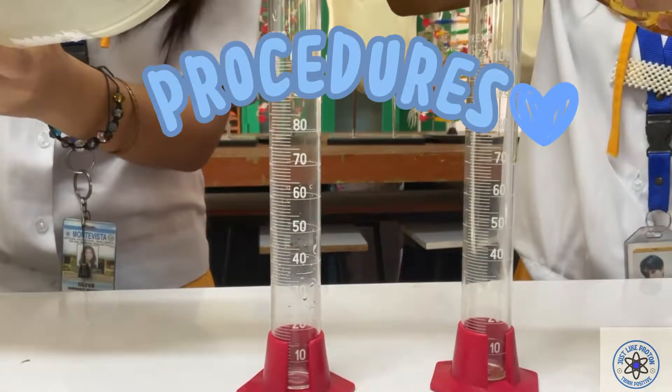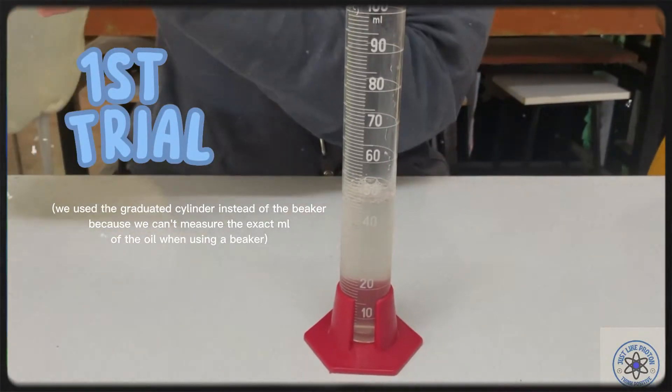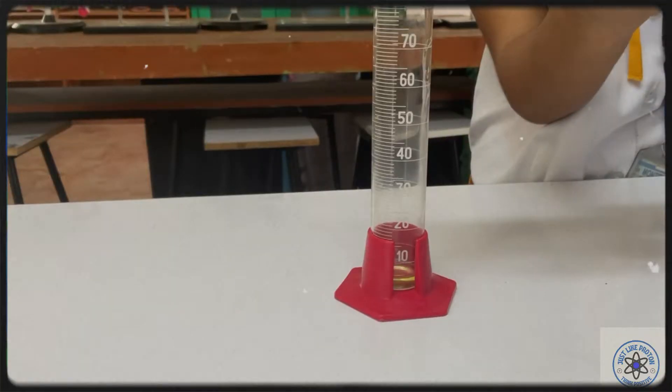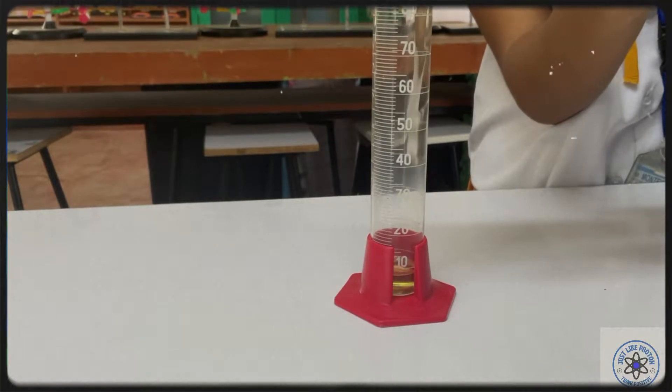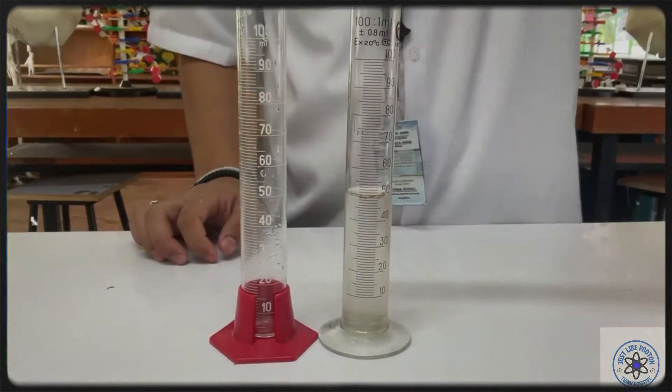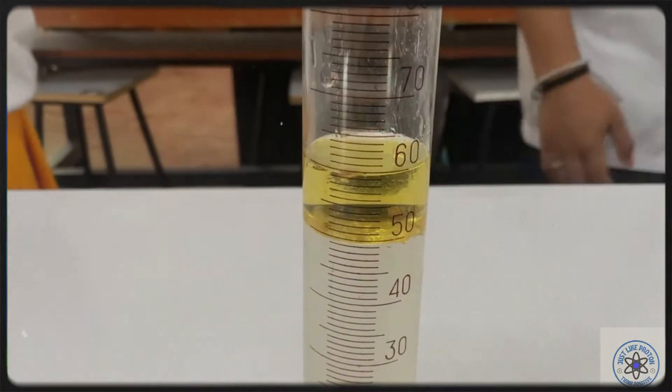Here are the procedures. Pour 50 ml of water into the graduated cylinder, and 10 ml of oil into the other graduated cylinder. Pour the measured water and oil into the graduated cylinder.